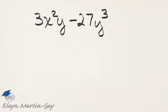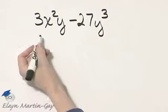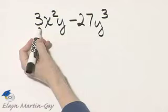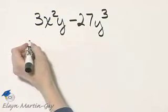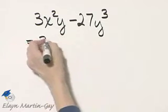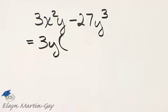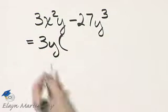What is the first step in factoring this binomial? Look for a common factor if there is one other than 1 or negative 1. Notice we have a common factor of 3 and a common factor of y, so the greatest common factor is 3y, and I'll factor it out of each of the two terms.